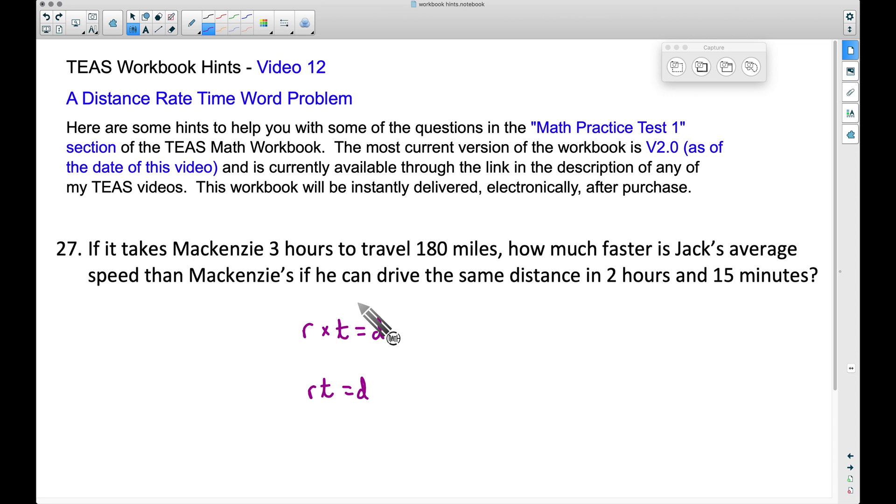What do we know about McKenzie? It took her three hours to travel 180 miles, so we know McKenzie's time T is going to be three, and we also know the distance that she travels is 180 miles. We can plug in the three for T and the 180 for D. This will allow us to solve for her rate or her speed, and this is an average speed.